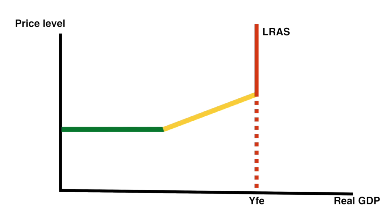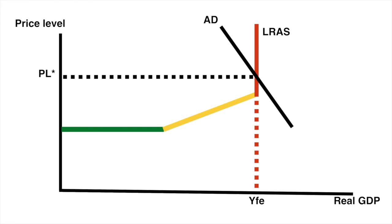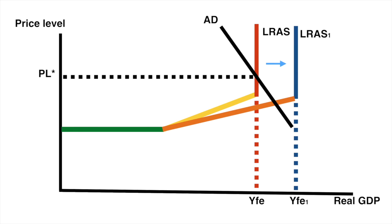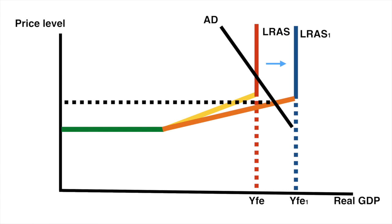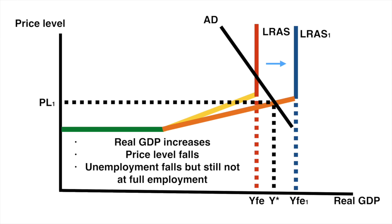However, it is possible to reduce the price level through the use of supply side policies. I'll cover them in more specific detail in the Unit 5 playlist, but for now let's see what impact an increase in aggregate supply will have on the economy. If we hold AD constant, an increase in LRAS will cause the price level to fall and extend our full employment level of output. Holding AD constant now means we are no longer operating along the vertical portion of the LRAS — we are now along our new LRAS and its upward sloping portion. Real GDP will increase, the price level falls, and unemployment falls, but now we are no longer at full employment.